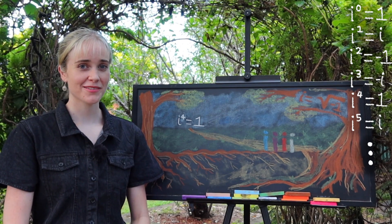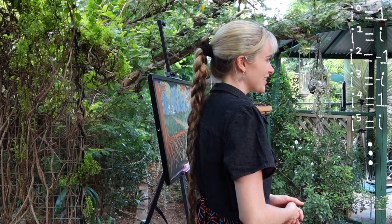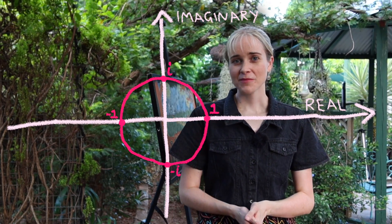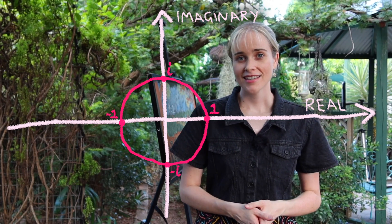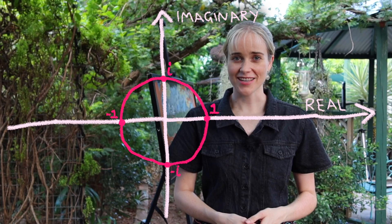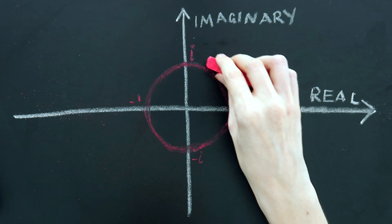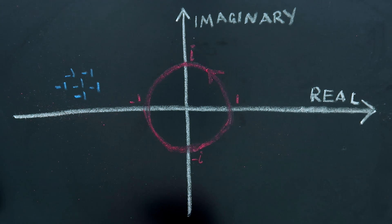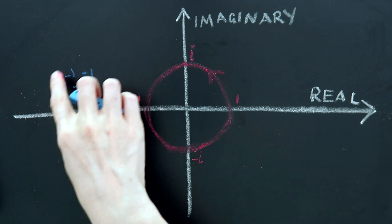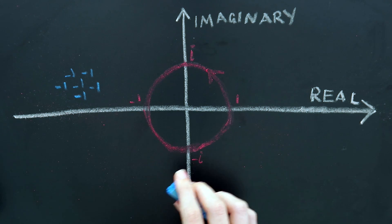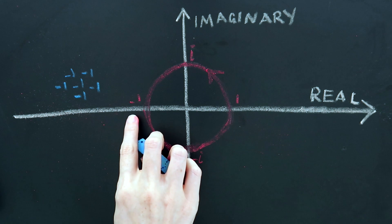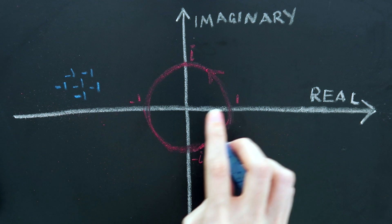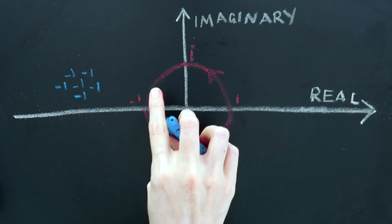We can show our story on a map where we're jumping between the points one, i, minus one, and minus i. And that is because multiplying by i is a rotation of 90 degrees. If the friends we met had been a gang of negative numbers, then we would have toggled between one and minus one. This flipping shows that multiplying by minus one is a rotation of 180 degrees.